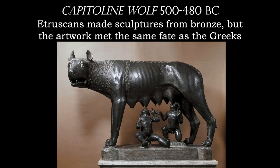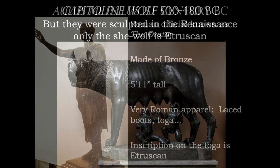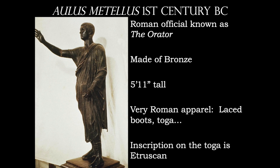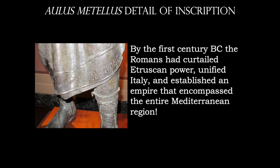The Capitoline Wolf is an Etruscan bronze work, with very few bronzes escaping the age. The sculptures of Romulus and Remus underneath were added during the Renaissance. Finally, the Aulus Metellus — known as the Orator — is a full life-size bronze sculpture. The figure is dressed as a Roman with a Republican haircut, but the inscription on the toga is in Etruscan writing. By the first century BC, the Romans had curtailed Etruscan power, unified Italy, and established an empire encompassing the entire Mediterranean region. We'll be focusing on the Romans after the midterm. Best of luck on that exam.